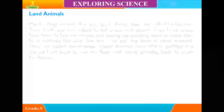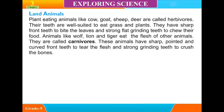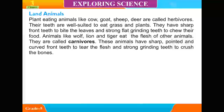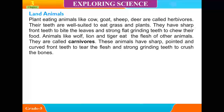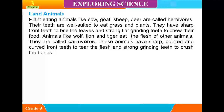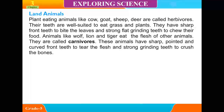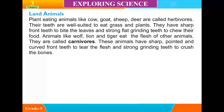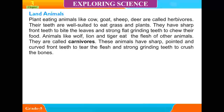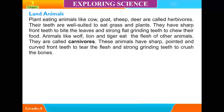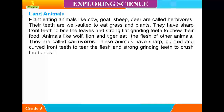Land Animals: Plant-eating animals like cow, goat, sheep, and deer are called herbivores. Their teeth are well suited to eat grass and plants. They have sharp front teeth to bite leaves and strong flat grinding teeth to chew their food.